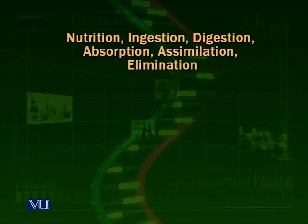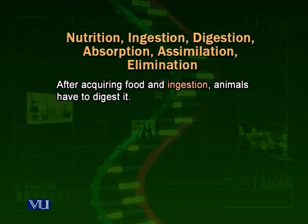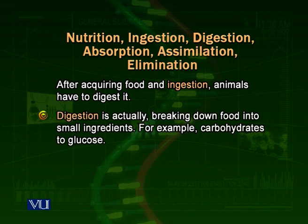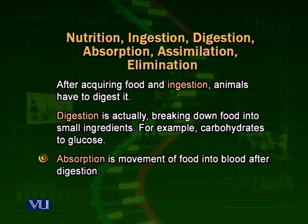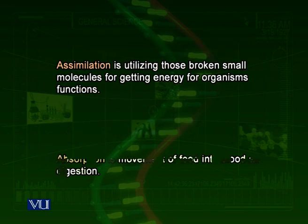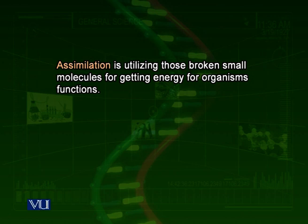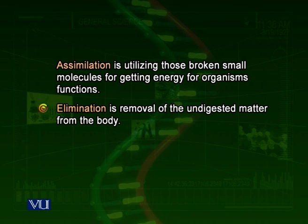We divide this process into a few steps. We call them: ingestion — taking the food in; the next step is digestion, which means breaking the food into smaller parts; then comes absorption — absorbing those smaller parts; then comes assimilation, that is making those broken, very small pieces of digested food part of the body, or converting these into energy and utilizing these for various functions of the body, or maybe for making different structures of the body. Then comes, at the end, elimination — removing the undigested parts of the food from the body.